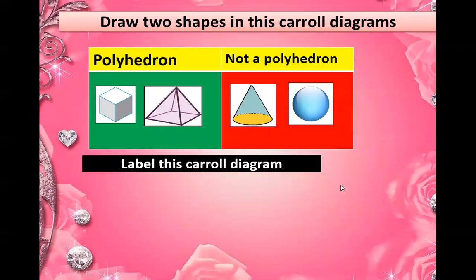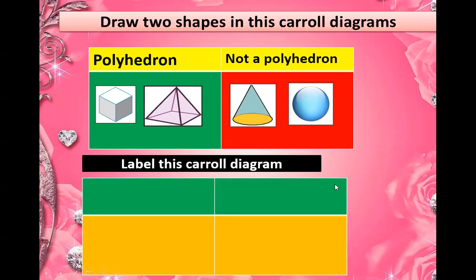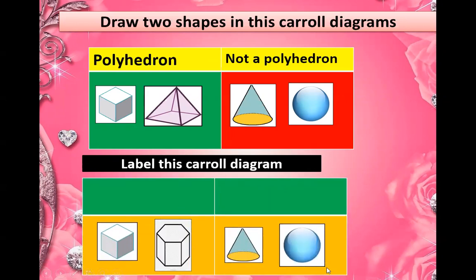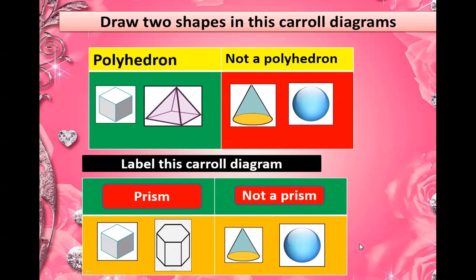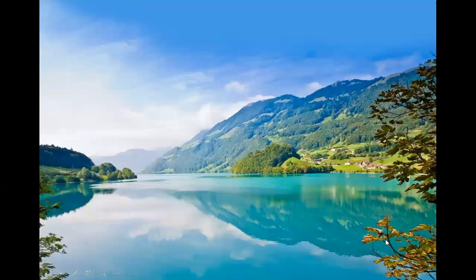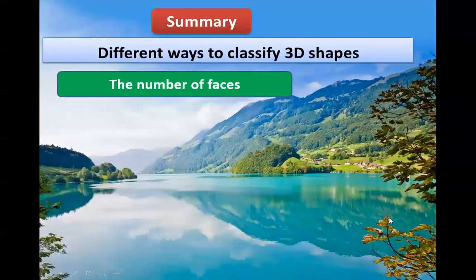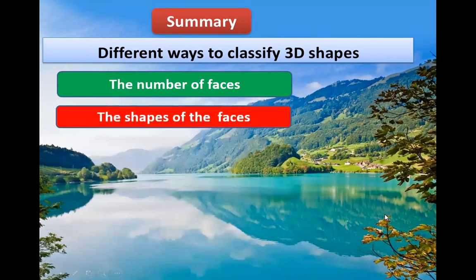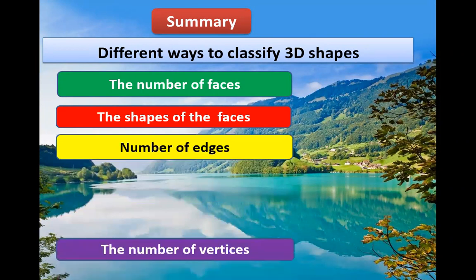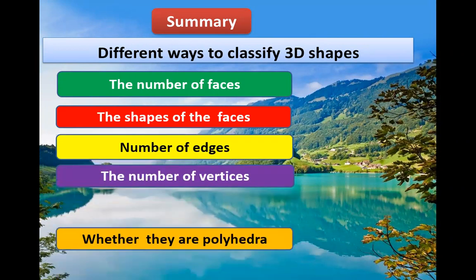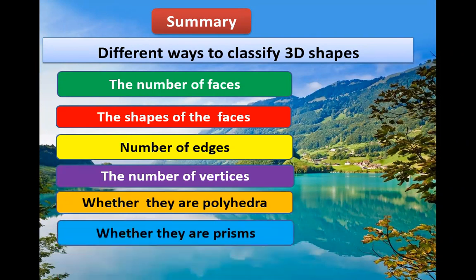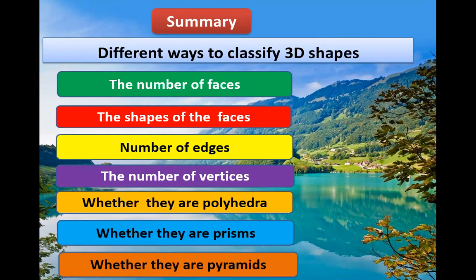Now label this Carroll diagram. I want you to identify these four shapes and write their names above them. These are the prisms and these are not a prism. Let's summarize today's lesson — different ways to classify 3D shapes: the number of faces, the shapes of the faces, number of edges, the number of vertices, whether they are polyhedra, whether they are prisms and whether they are pyramids.